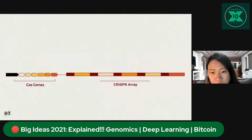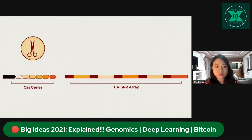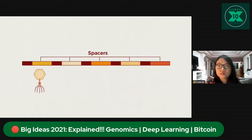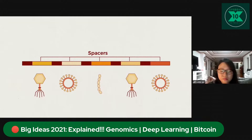Cas genes encode enzymes that can cut DNA, but at the time no one knew why they did so, or why they were always next to the CRISPR sequence. Soon scientists noticed something else — the CRISPR spacers, the variable sequences in between the repeating sequences, looked a lot like viral DNA.